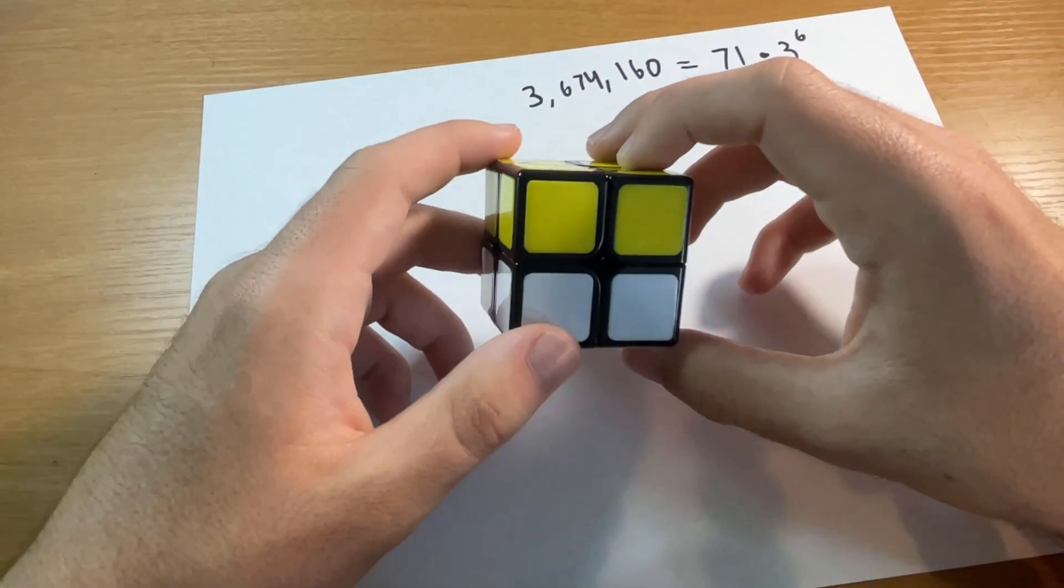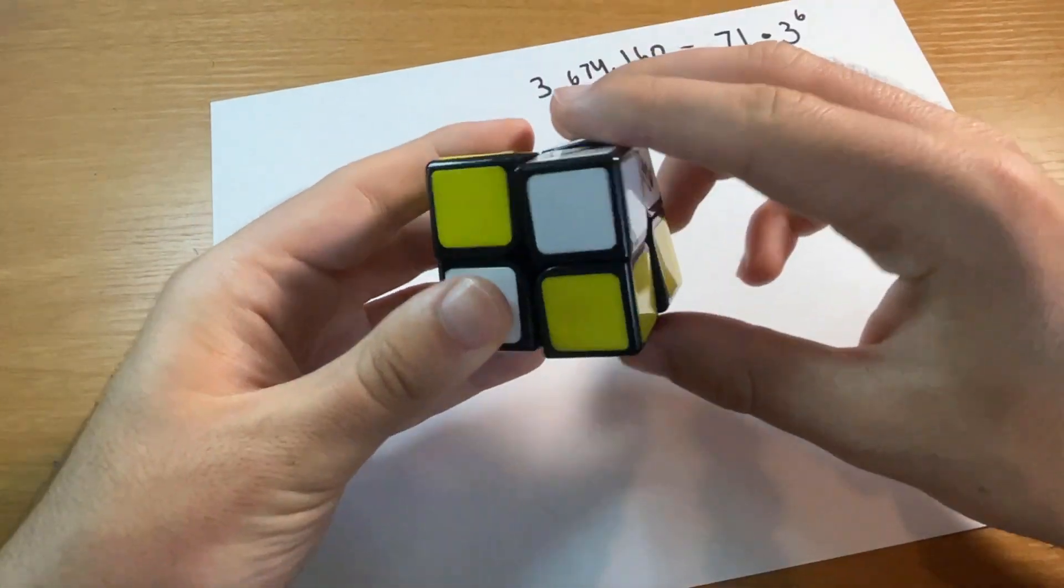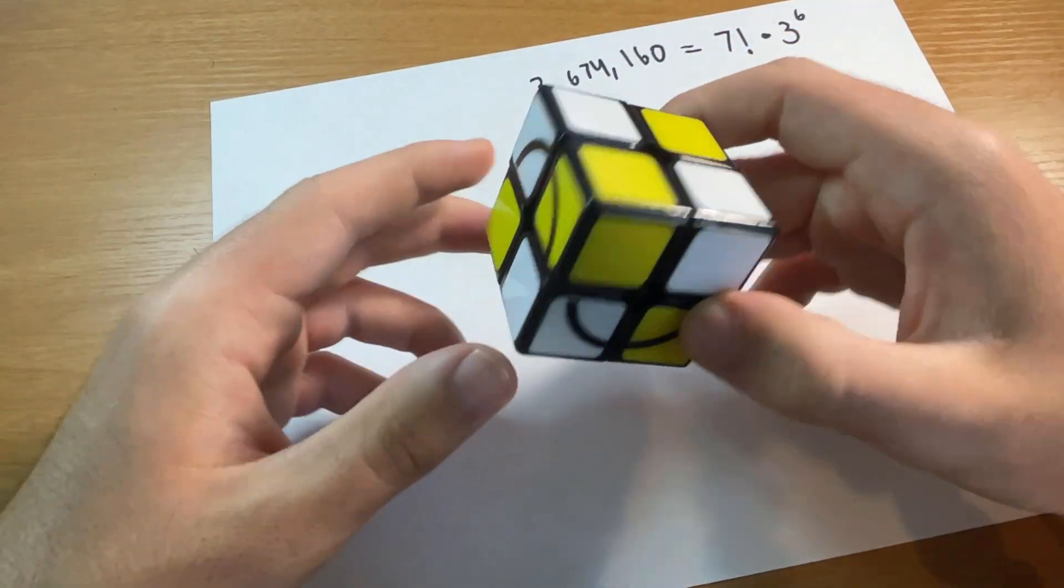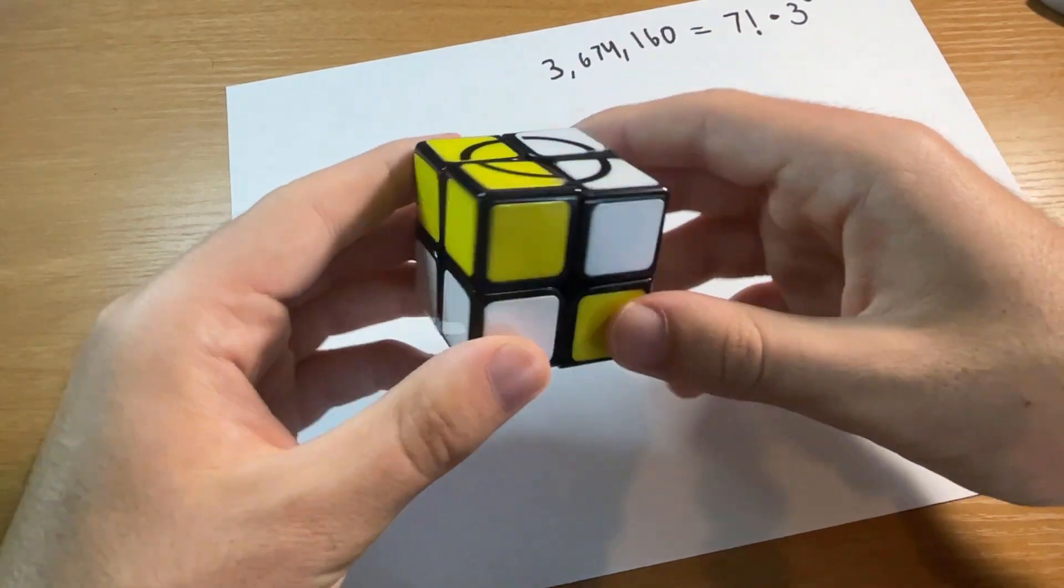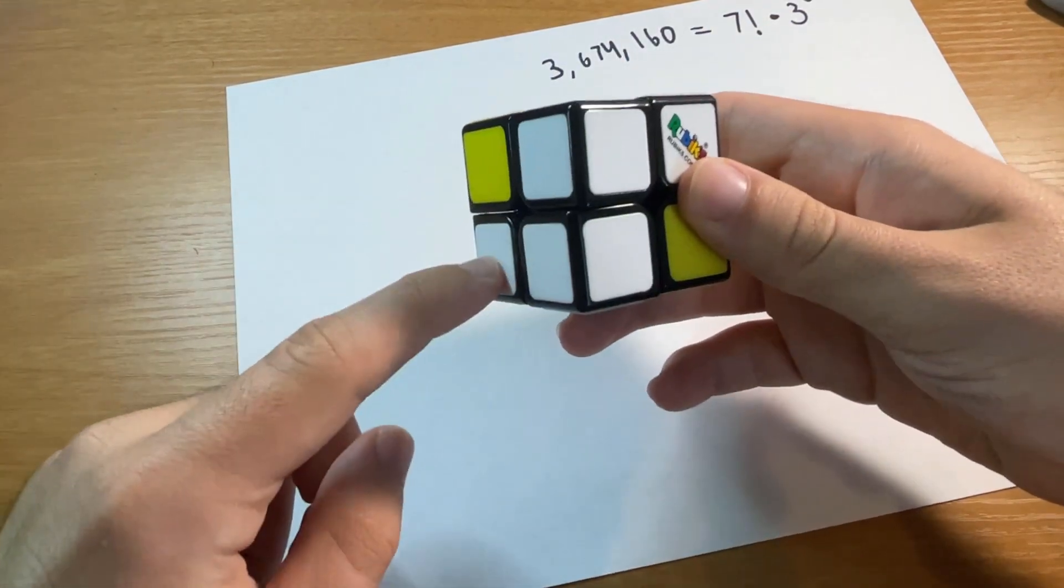For example, there's only one combination where there's no white pieces touching each other, and that's this one which kind of looks like a checkerboard. Now this is the only combination where two white pieces are touching and not a third. For example, here would be an L-shape of three pieces, here there'd be an L-shape of three pieces.